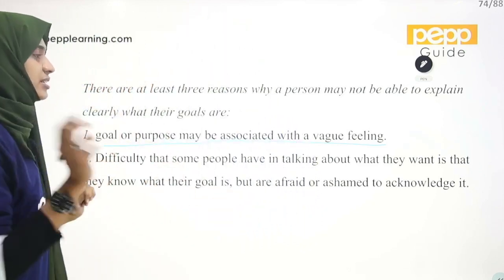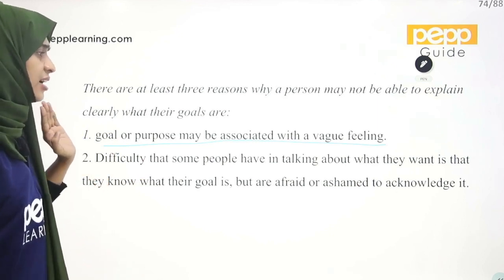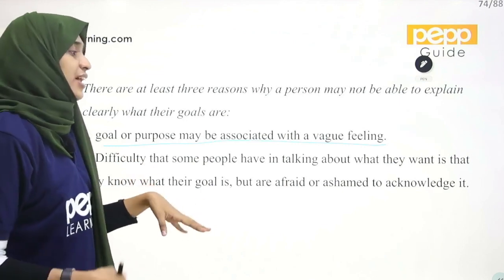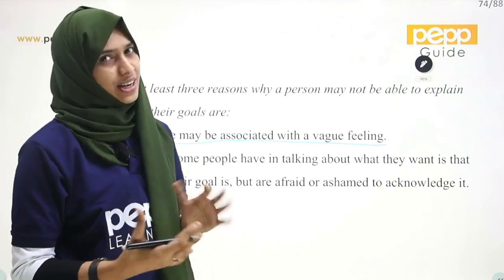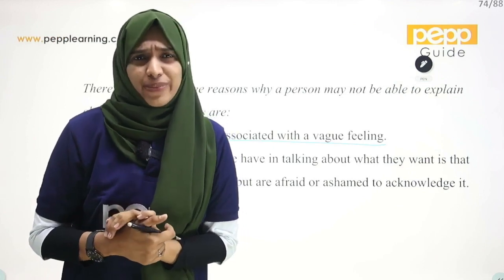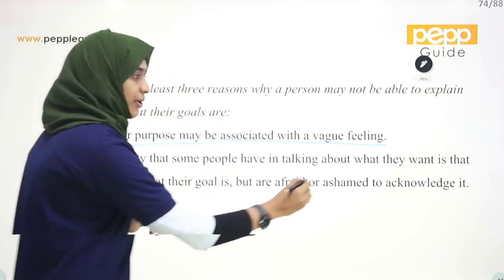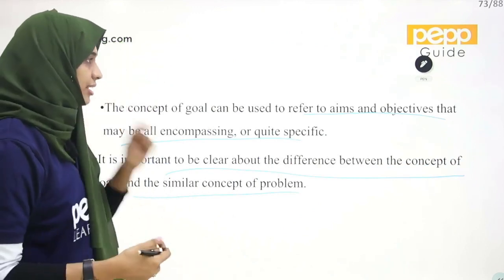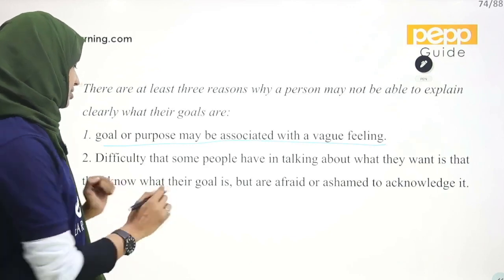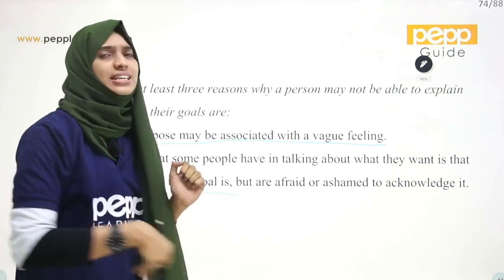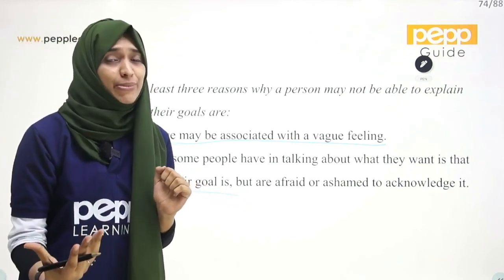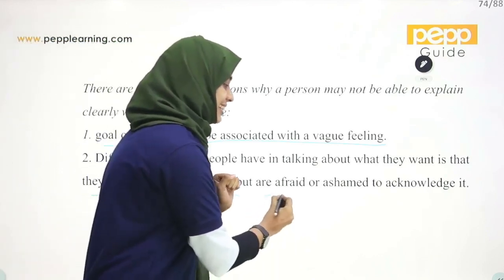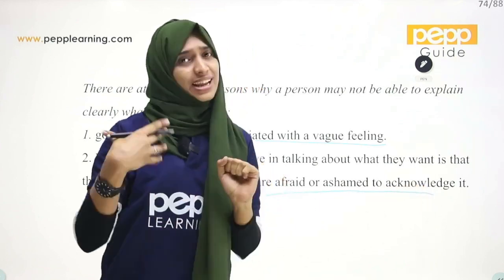The second reason is that the person knows what their goal is, but they are afraid or ashamed to acknowledge it. They know what they want and what their goal is, but they are afraid or ashamed to acknowledge it.